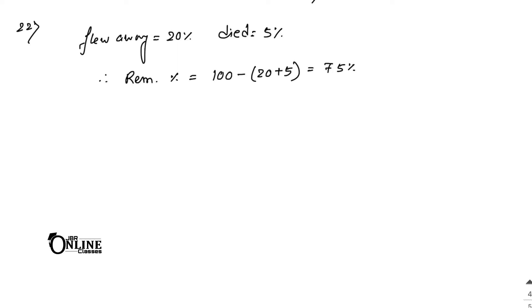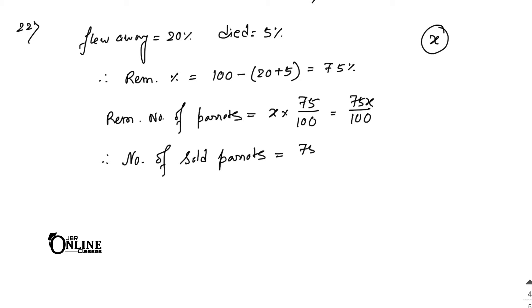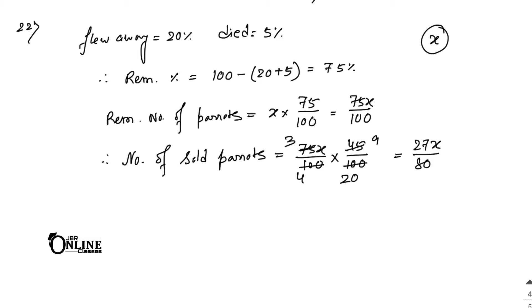Of the remaining 75 percent, 45 percent were sold. Let the total number of parrots be x. The remaining number of parrots equals x into 75 by 100, that is 75x by 100. The number of sold parrots equals 75x by 100 into 45 by 100. Simplifying, that gives 27x divided by 80.